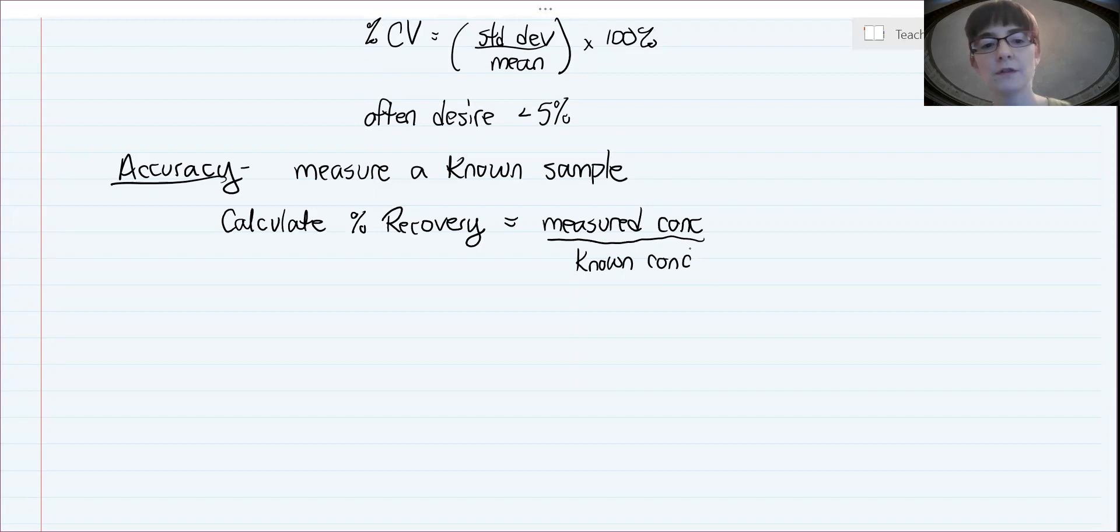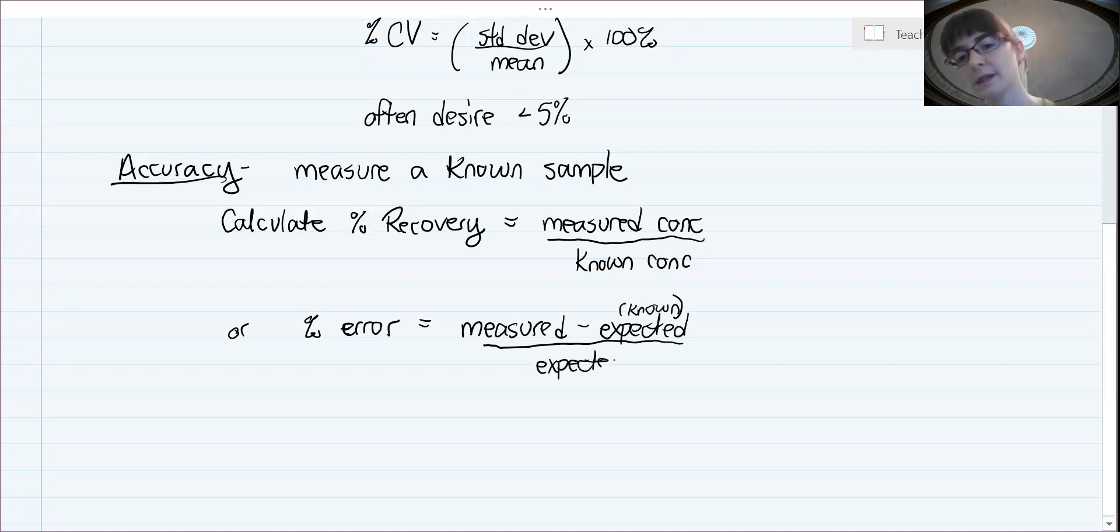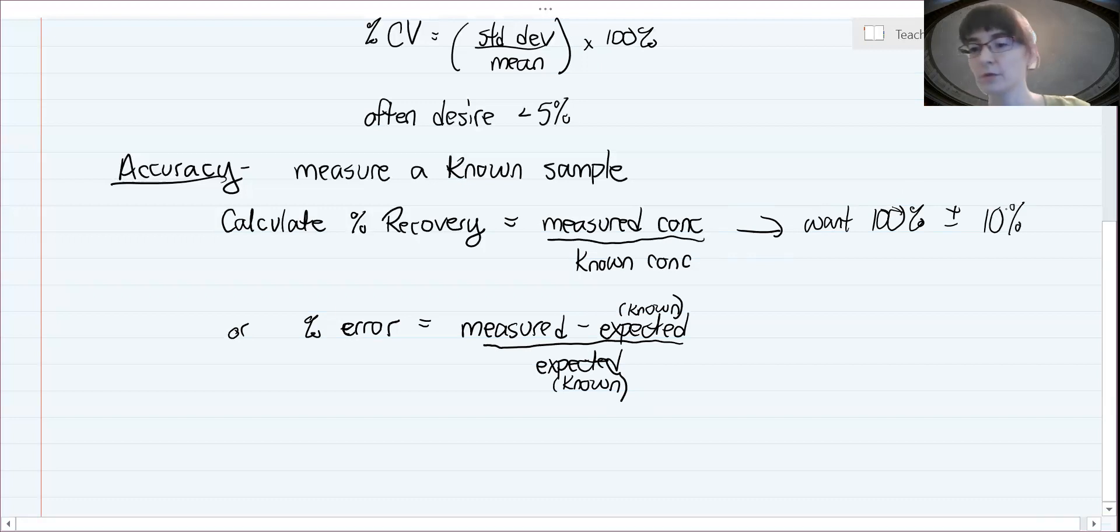There's also another way that you may have seen before to calculate accuracy, and that is called sometimes referred to as percent error. That's slightly different. That's the measured concentration minus the expected or the known, that difference divided by the expected, which is also the same thing as known. What this will give is a small number. So for percent recovery, we want it to be close to 100. The ideal would be 100 percent, and it's often acceptable if it's within 5 percent or 10 percent of that, depending on the requirements for the assay at hand. Whereas percent error, you really want that to be zero.